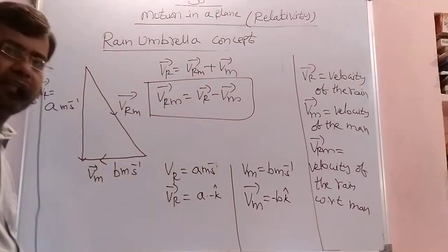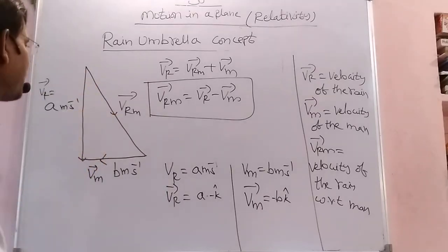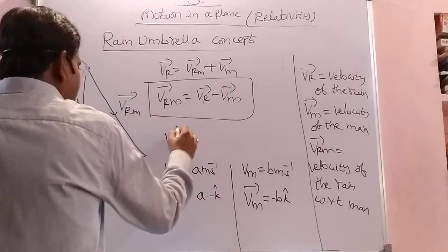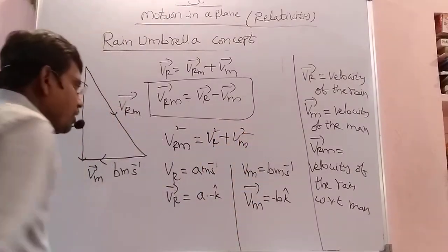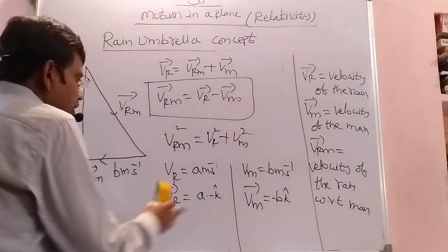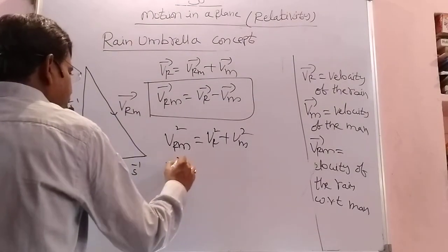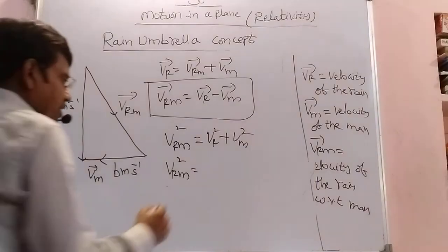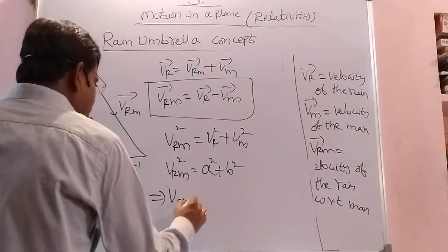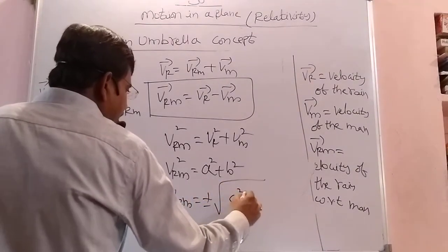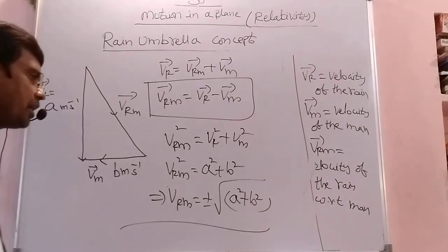If you take magnitudes, this forms a right-angle triangle. So we write Vrm squared equals Vr squared plus Vm squared. Substituting, Vrm squared equals a squared plus b squared. Therefore, Vrm equals plus or minus the square root of a squared plus b squared. That is the relative velocity magnitude.